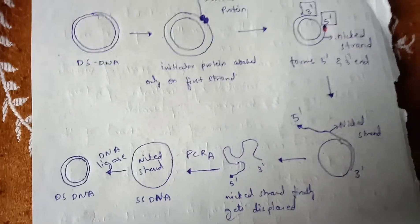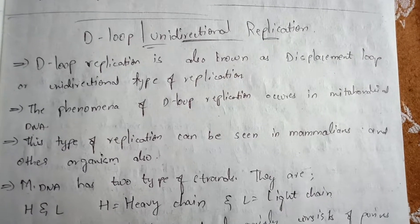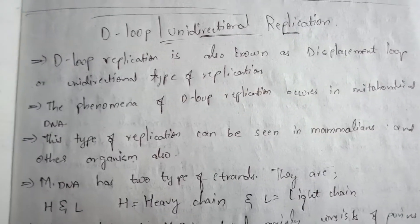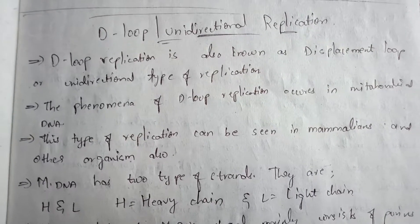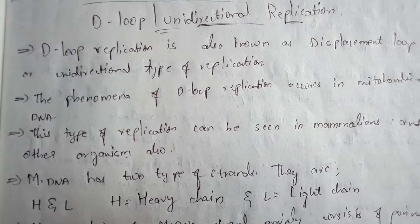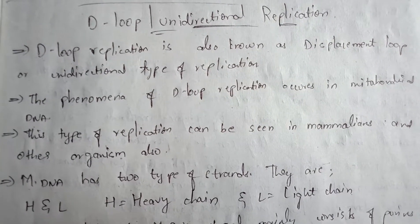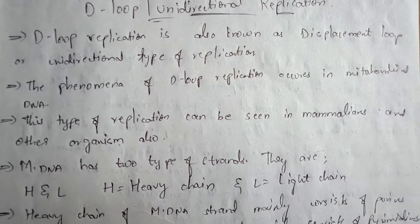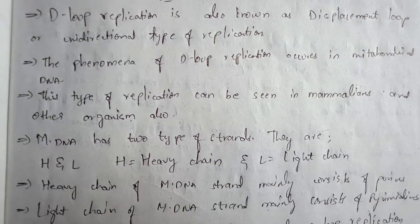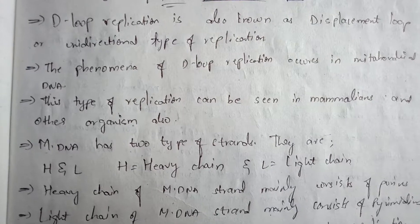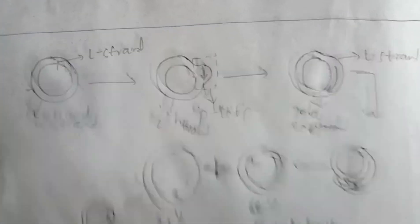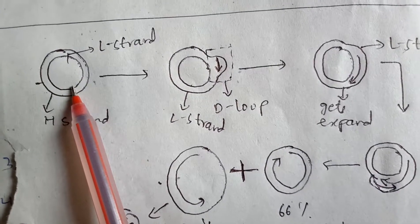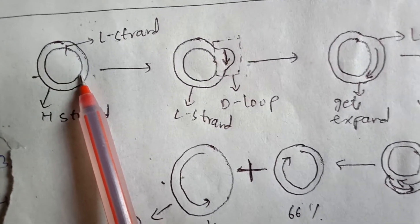Now let us discuss D-loop replication. D-loop replication is also known as displacement loop or unidirectional replication. This type of replication occurs in mitochondrial DNA and can be seen in mammals and other organisms. Mitochondrial DNA has two strands: the heavy chain (H strand) and the light chain (L strand).